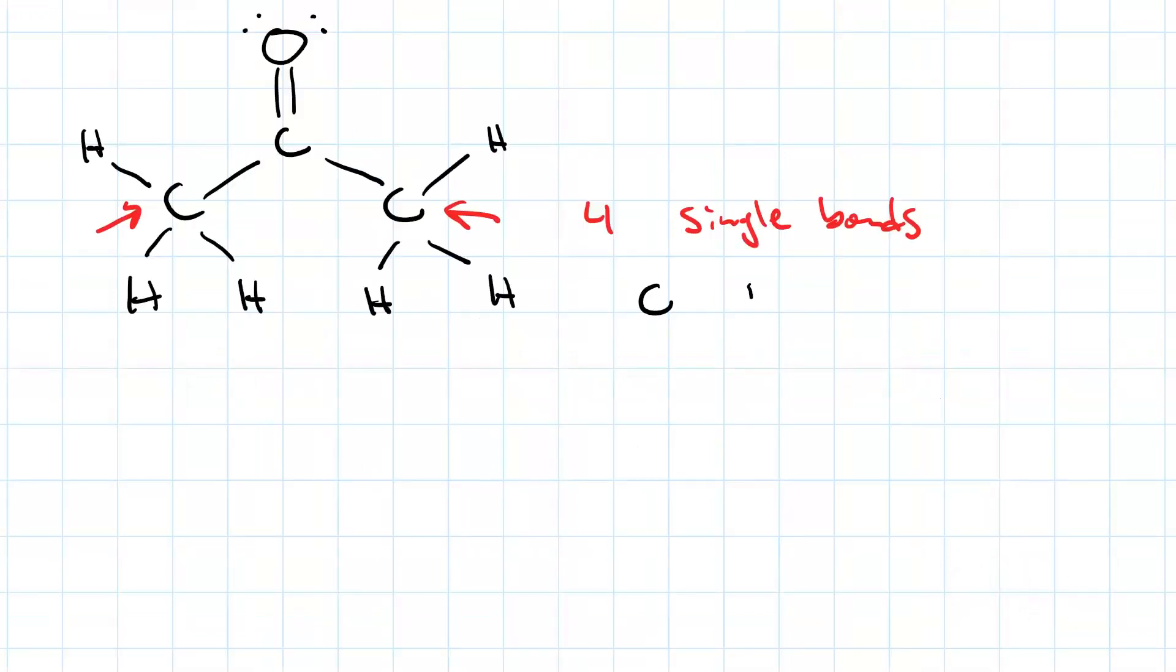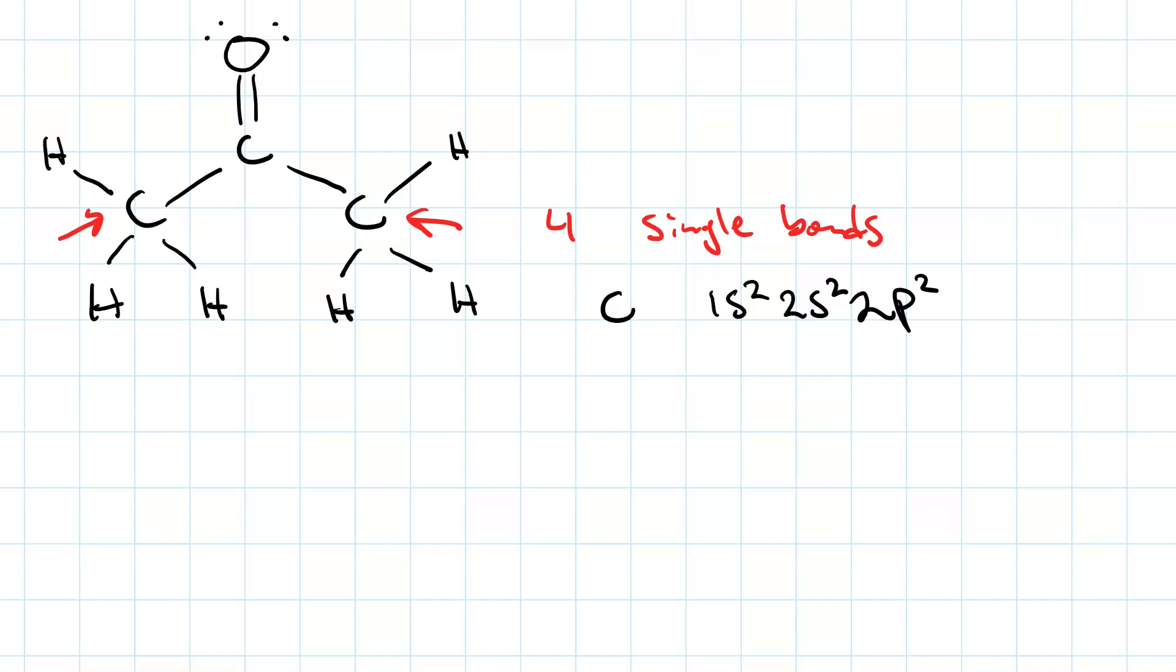Now, the electron configuration of carbon is 1s2, 2s2, 2p2. The 2s and 2p electrons are the valence electrons. Here's your 2s orbital with its two electrons and your three 2p orbitals with two electrons added according to Hund's rule. According to valence bond theory, carbon should only be able to make two bonds because we have only two unpaired electrons. How does carbon make four bonds? The answer is, it hybridizes.